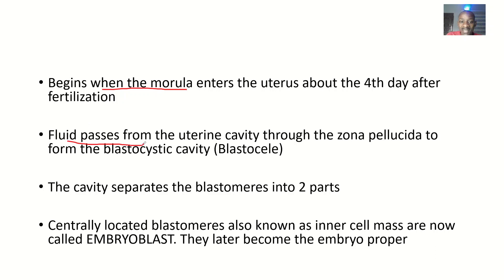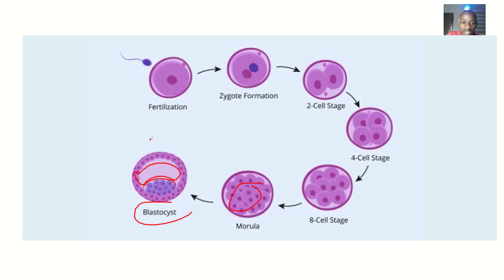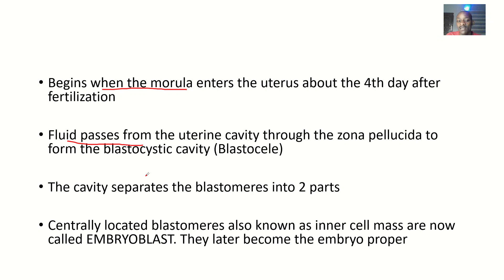Fluid passes from the uterine cavity through the zona pellucida to form the blastocystic cavity. You can see the morula here has no cavity, but here there is a cavity.